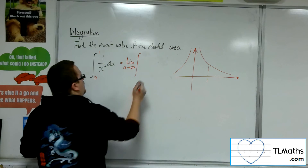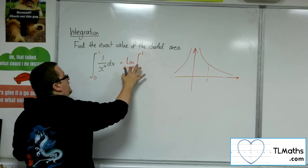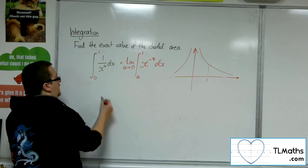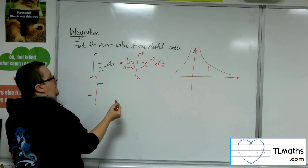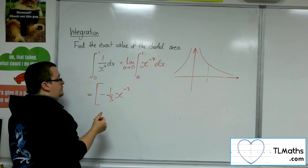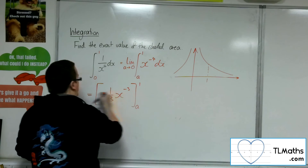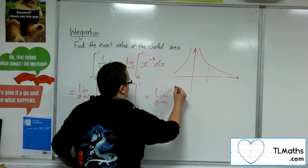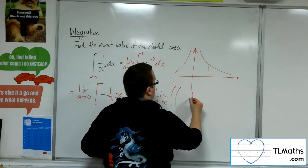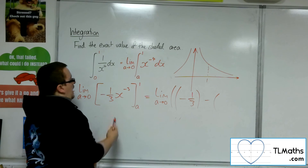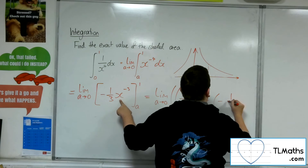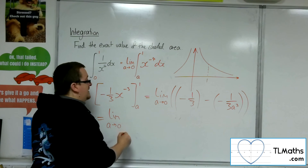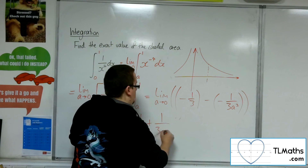To determine if this exists, we're going to let a tend to 0 and integrate x to the minus 4 dx from a to 1. The antiderivative is minus 1 third x to the minus 3. So, taking the limit as a tends to 0: substituting in 1 gives minus 1 third. Take away substituting in a: minus 1 third times a to the minus 3, which is minus 1 over 3a cubed. So, the limit as a tends to 0 of minus 1 third plus 1 over 3a cubed.